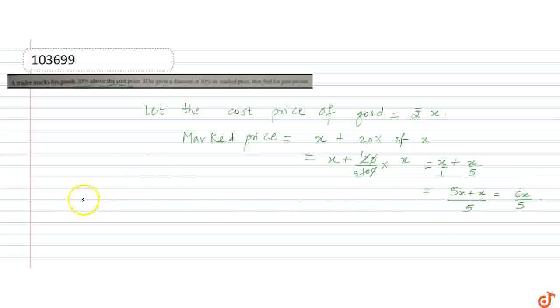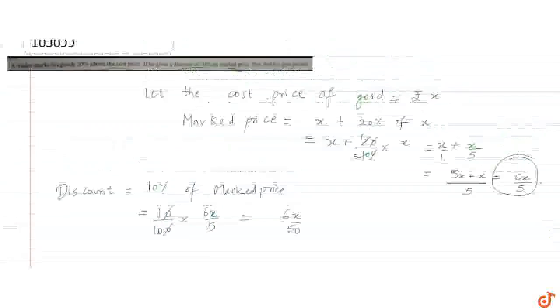Now, if he gives a discount of 10% on the marked price. So discount is 10% of marked price. 10% means 10 upon 100 of marked price. Marked price was 6X by 5. The zeros again cancel out. So you're left with 6X upon 50. 5 into 10 is 50. So I found out the discount.